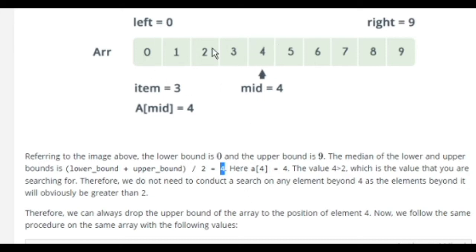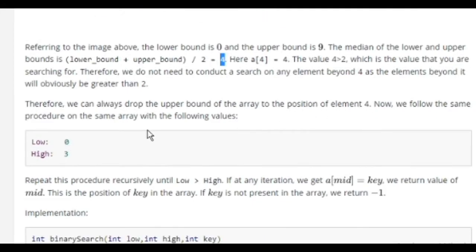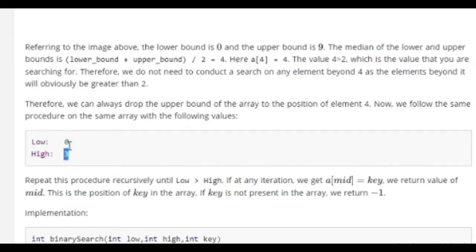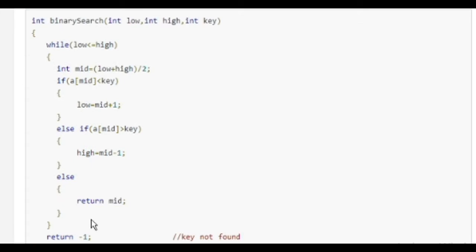So we are shorting our range from 0 to 4. We know that 2 is smaller than 4, so we are going to search over here on the left hand side. Therefore, we can always drop the upper bound of the array to the position of element 4. Now we follow the same procedure on the same array with the following values. The better thing is, we are taking High as 3, from 0 to 3. Repeat the procedure recursively until Low greater than High. This is the implementation.